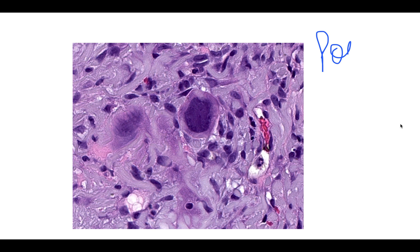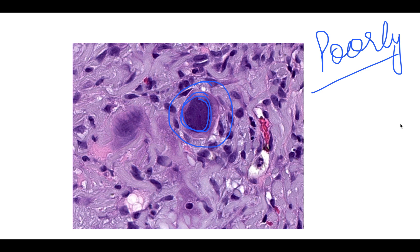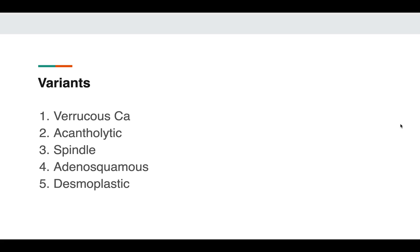In poorly differentiated squamous cell carcinoma, the cells will be very bizarre. The nucleus is hyperchromatic and the degree of keratinization falls down significantly. This is poorly differentiated SCC.